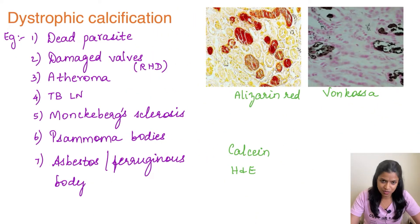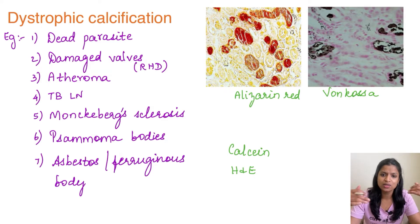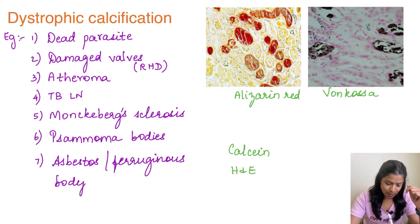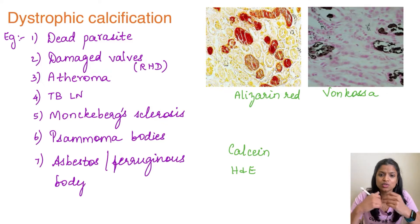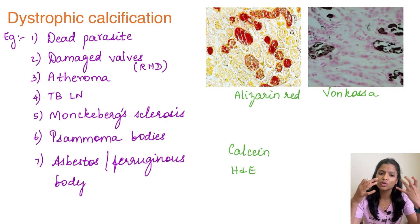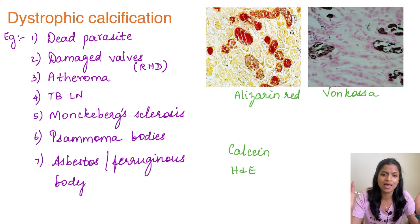Starting with dystrophic calcification — any dead tissue is an example. Like a parasite which is dead: calcium will get accumulated around it like a tombstone. The same goes for a tuberculosis lymph node where we see caseous necrosis, which is a necrotic dead tissue. The entire lymph node can be turned into calcium and will appear like a stone.